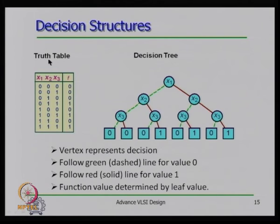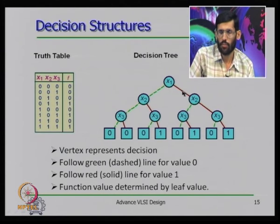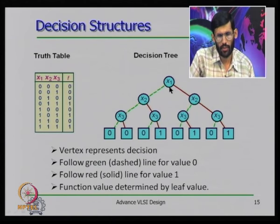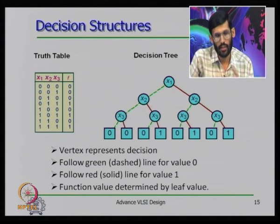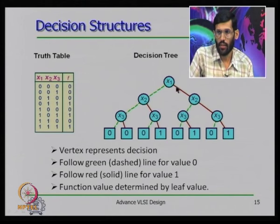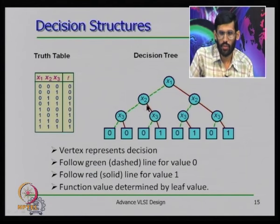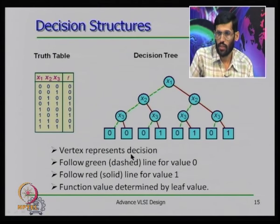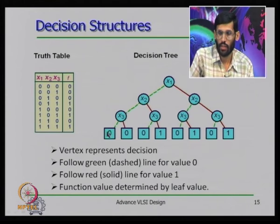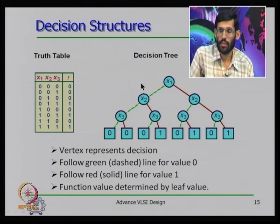To construct a binary decision tree from a truth table, say the function has three variables x1, x2, x3, evaluated in order x1, x2, x3. If x1=1 we evaluate one sub-function; within that, if x2=1 we evaluate another; and finally evaluating x3. When x1=1, x2=1, x3=1 the output is 0 — corresponding to that truth table entry. Every path in the binary decision tree represents one entry in the truth table.